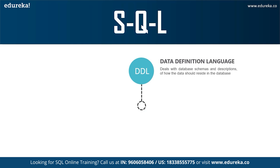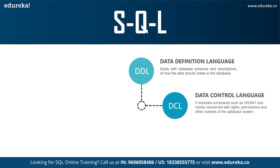DDL is very popular and extensively used compared to other commands. Moving on to DCL — Data Control Language — which allows you to control access to the database. The GRANT command gives user access privileges to the database, while the REVOKE command withdraws user access privileges that were previously given with the GRANT command.